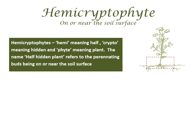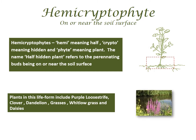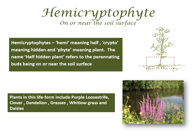Hemicryptophytes — hemi meaning half, crypto meaning hidden and phyte meaning plant. The name 'half hidden plant' refers to the perennating buds being on or near the soil surface. Plants in this lifeform include purple loosestrife, clover, dandelion, grasses, whitlow grass and daisies, among many others.